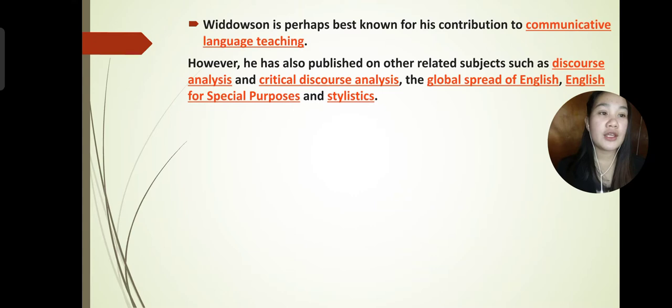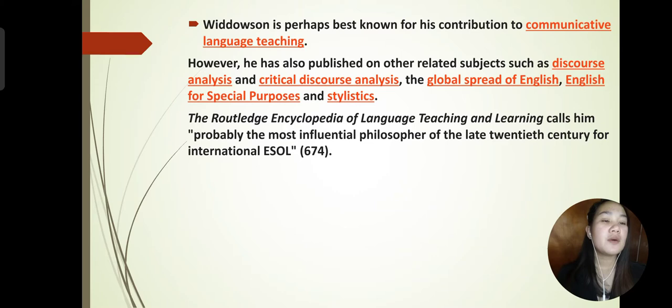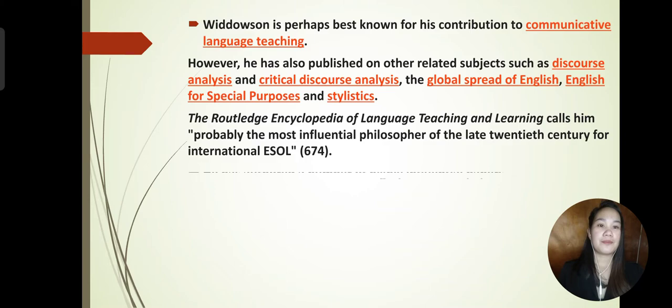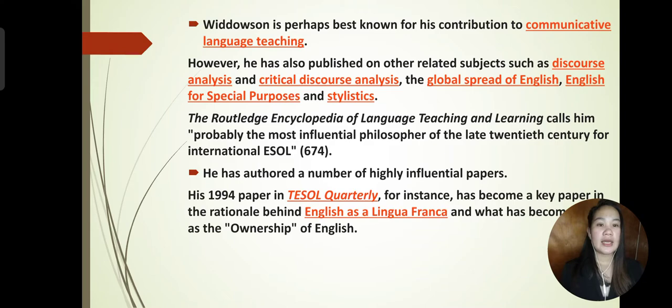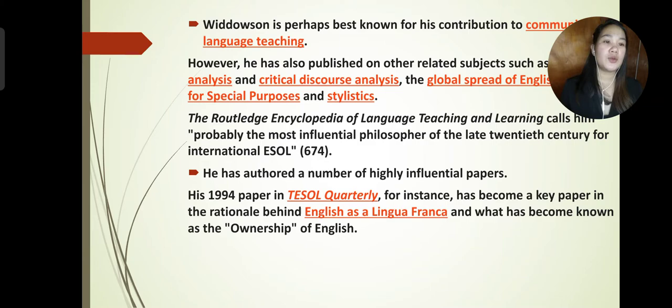The Routledge Encyclopedia of Language Teaching and Learning calls him probably the most influential philosopher of the late 20th century for international ESOL. He has authored a number of highly influential papers. His 1994 paper in TESOL Quarterly has become a key paper in the rationale behind English as a lingua franca and what has become known as the ownership of English.